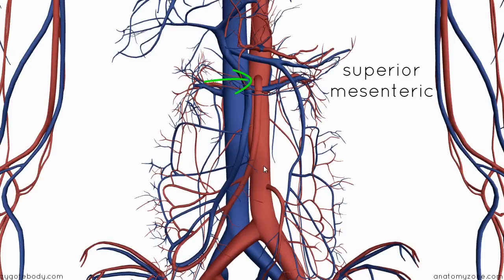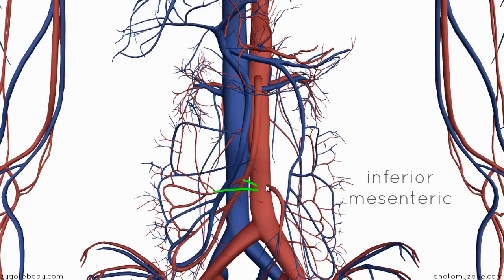Just a little bit further down, coming off to the side, we've got the inferior mesenteric artery.